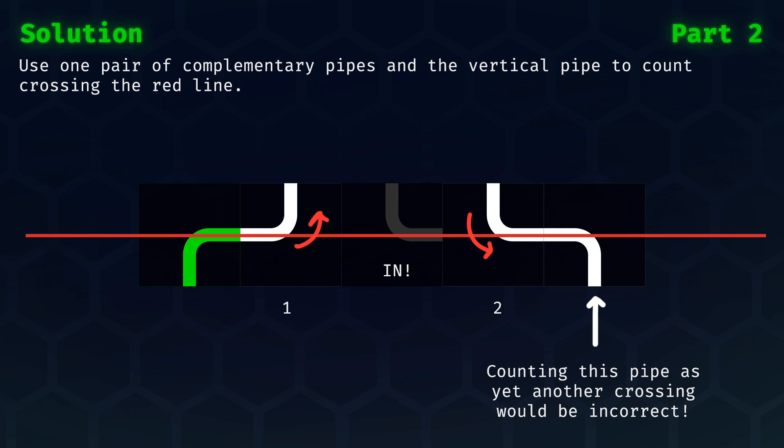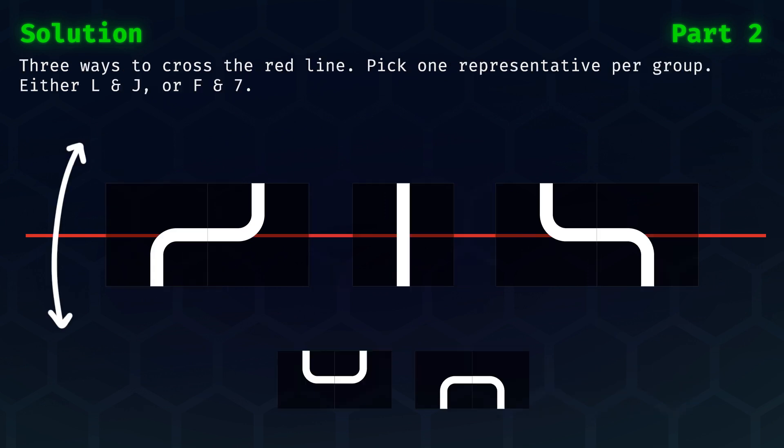Now, this may not be very intuitive, but there are three ways to cross the red line, either from top to bottom or the other way around. So, to make it more explicit, from each group we need to pick one representative.